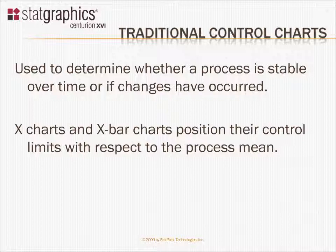If you look at X charts and X-bar charts, for example, they position their control limits with respect to the process mean, typically at plus or minus 3 sigma around the process mean. And they generate an alert if a point on the chart goes beyond those 3 sigma control limits.